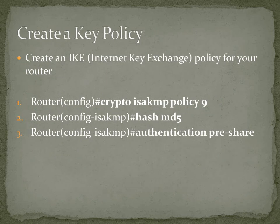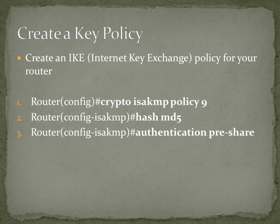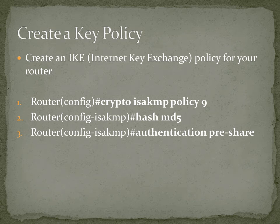The first thing you want to do — your first step — is create what's called a key policy, an IKE, an Internet Key Exchange Policy for your router. So when you're in a router in your config, you type in crypto ISAKMP policy 9 — basically give it a policy number. And then tell it what kind of hash you want it to use. I just chose MD5. It's easy, everybody knows it, and it's computationally very low weight on your router.